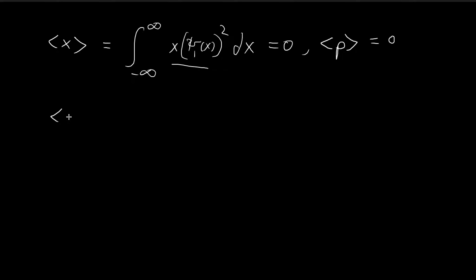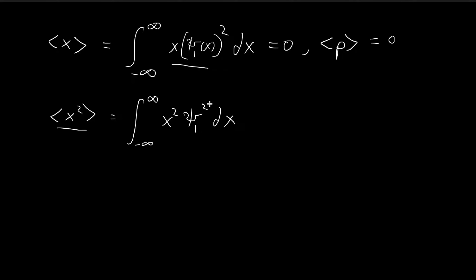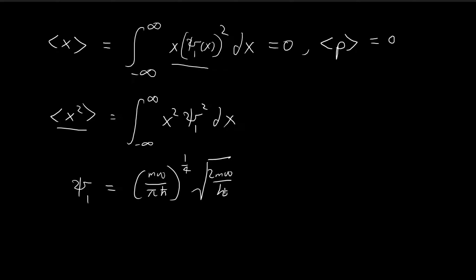So essentially this whole video is going to be focused on finding the expected value of x squared. The formula for that is just applying x squared times ξ₁ squared dx. Now let us remind ourselves what ξ₁ is equal to. David Griffiths proved it in his book that ξ₁ is equal to this constant times the square root of 2mω divided by ℏ-bar, times x, times the exponential component.